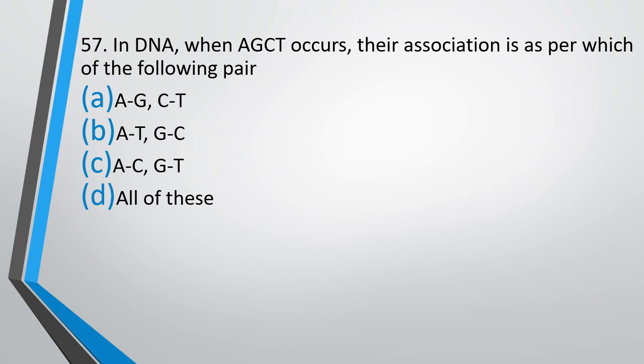Question number 57. In DNA, when A, G, C, T occurs, their association as per which of the following pairs is seen? A with G, C with T, A with T, G with C, A with C, G with T, all of these. The correct answer is Option B. A always bonds with T and G occurs with C.